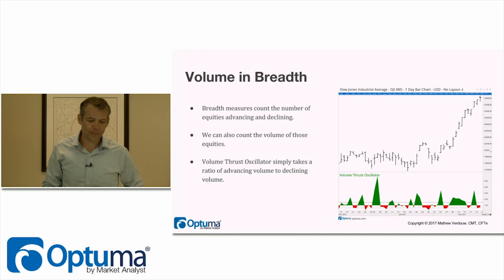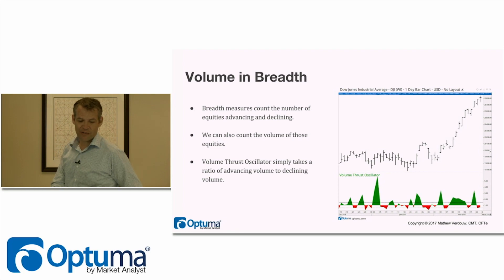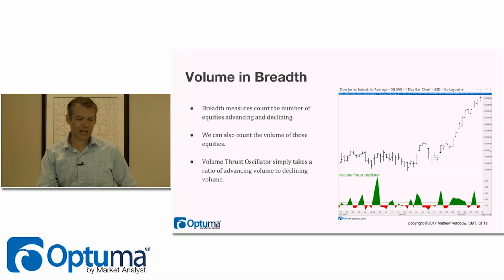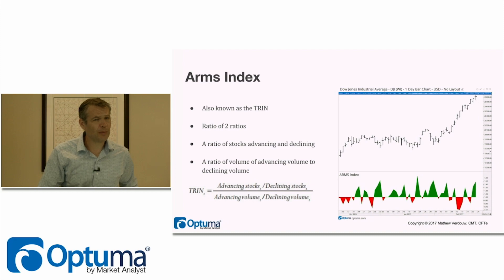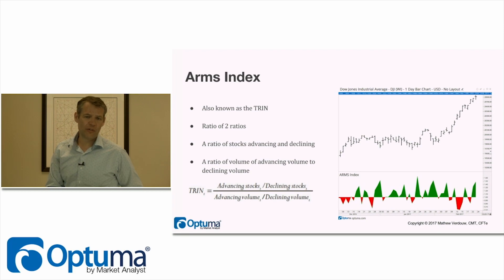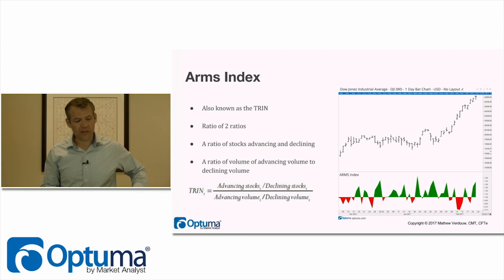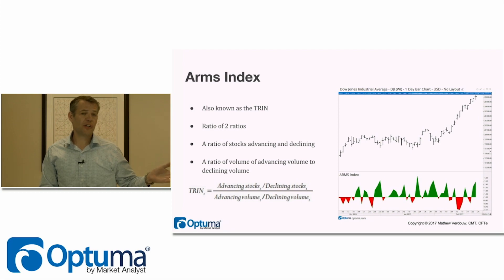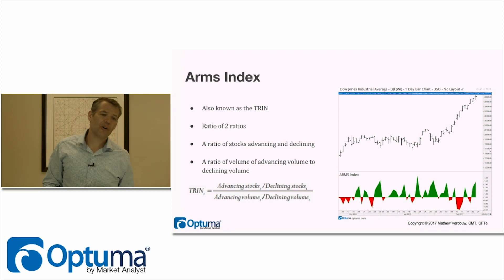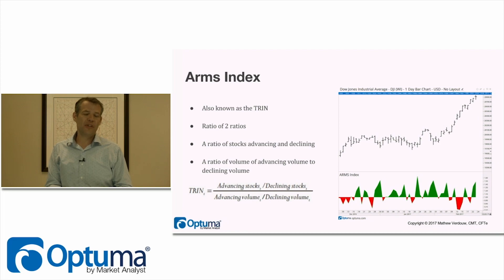The Volume Thrust Oscillator is one example — a break above around 1.5 can be used as an indicator. The Arms Index, also known as TRIN from its ticker symbol, is probably the most popular: it takes a ratio between the number of advancing stocks versus declining stocks, and then also a ratio of advancing volume versus declining volume, combining those into the Arms Index or TRIN value.